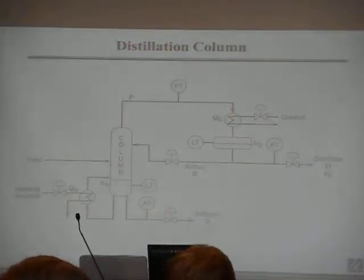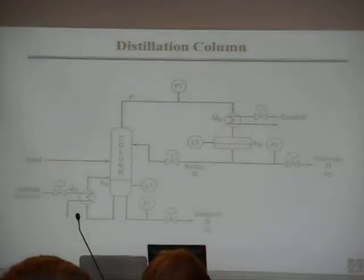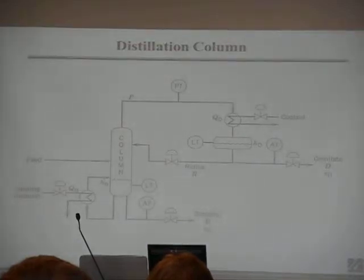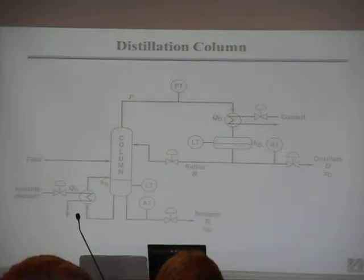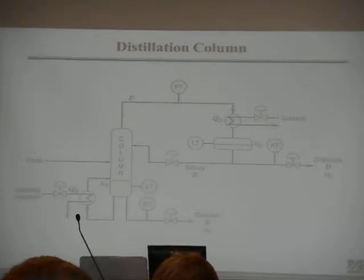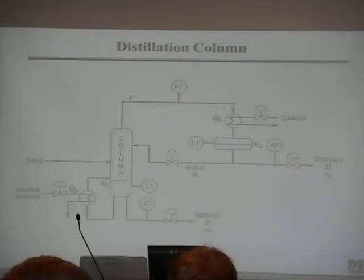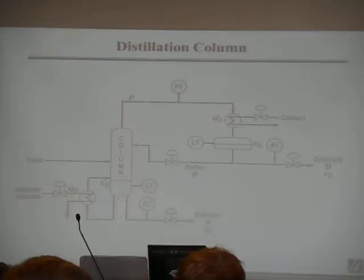So you only do composition measurements if you have to. When you work in a plant, one group is the operations people whose job is to make money, and your group is designed to make sure the plant operates well. The people that make money always reign supreme. If you say you'd really like to know the composition in the feed, they'll say 'how much money is it going to make?' All this instrumentation costs money — if you ever want to do something, you have to prove it makes money. That's the only way you get anything done.